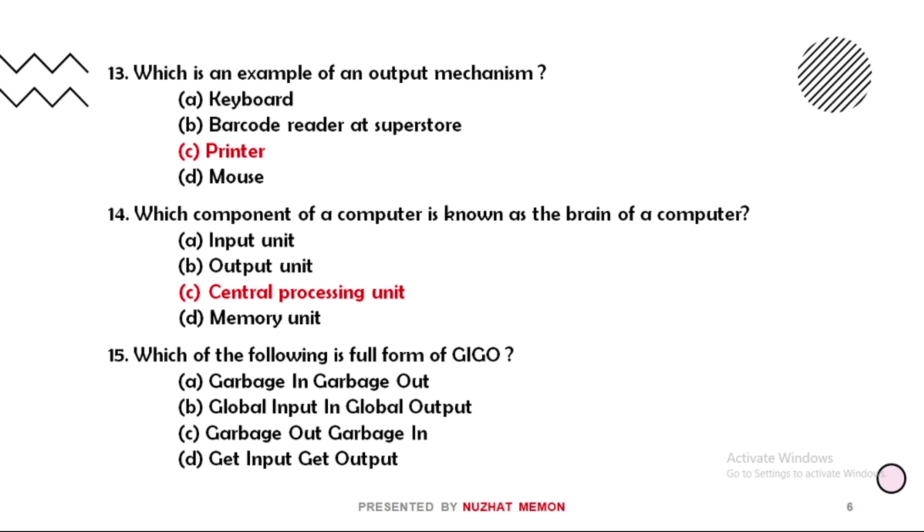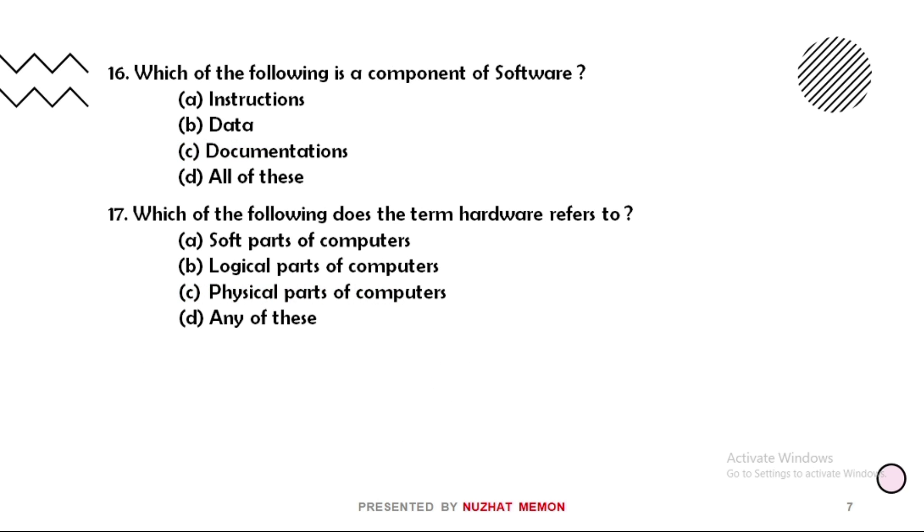Fifteen: which of the following is the full form of GIGO? GIGO means garbage in and garbage out. So option A is the correct one. Sixteen: which of the following is a component of software? Here is option D, all of these - that is instructions, data, and documentations. These three of them are components of software.